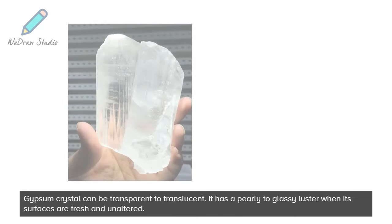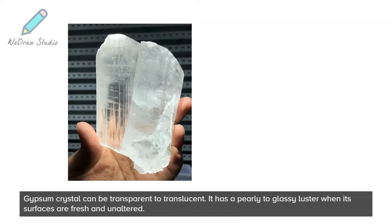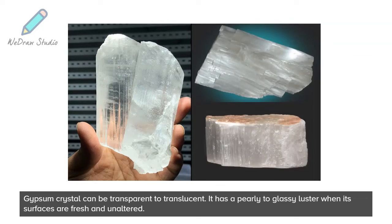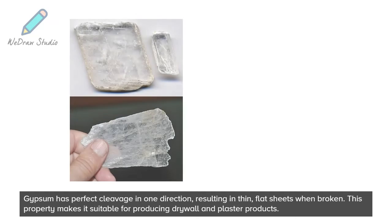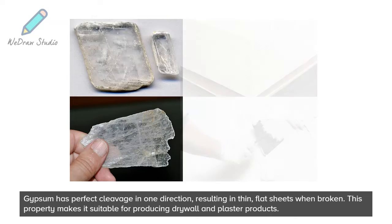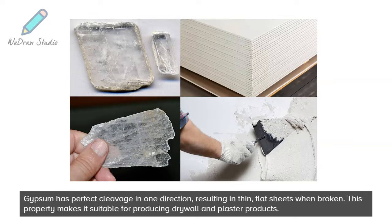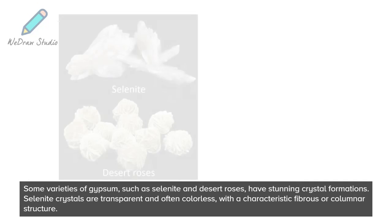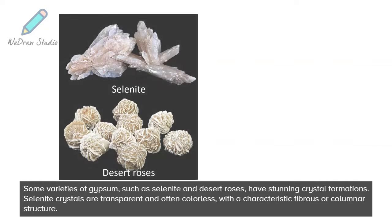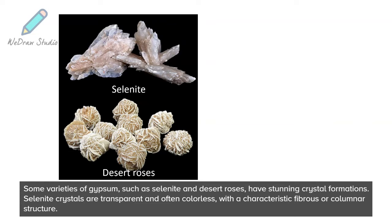Gypsum crystals can be transparent to translucent, with a pearly to glassy luster when their surfaces are fresh and unaltered. Gypsum has perfect cleavage in one direction, resulting in thin flat sheets when broken. This property makes it suitable for producing drywall and plaster products.